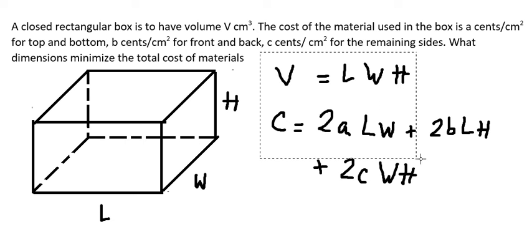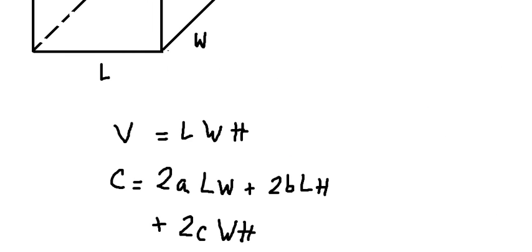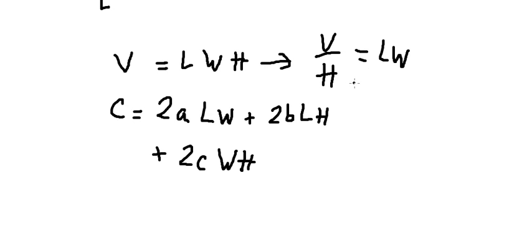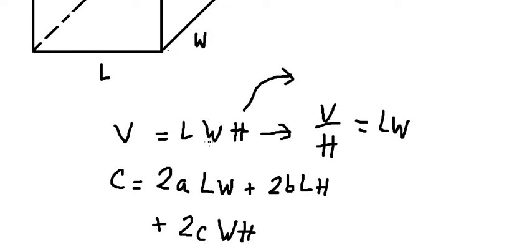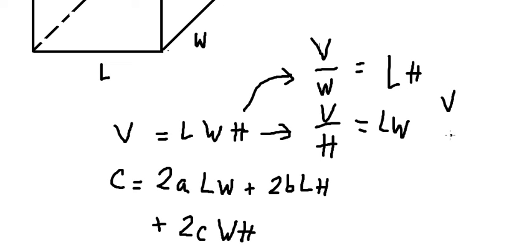Now, using the volume equation V = LWH, we solve for one variable. I will divide both sides by H, giving LW = V over H. Then dividing by L gives W = V over (L·H), and dividing by W gives L = V over (W·H).